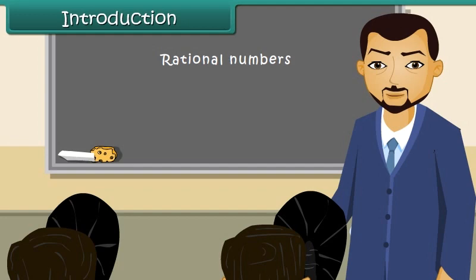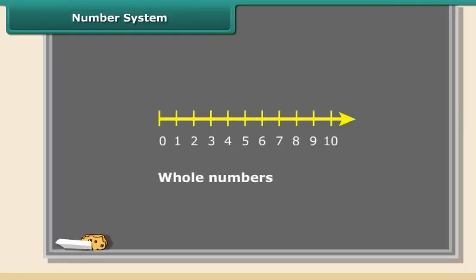Whole numbers are simply the numbers 0, 1, 2, 3, 4, 5, and so on. There are no fractions.